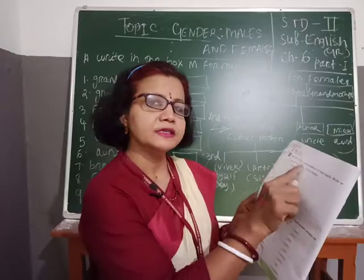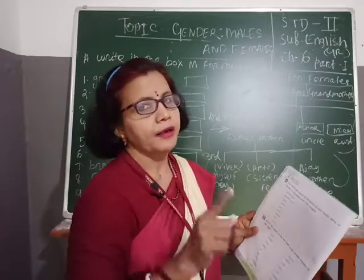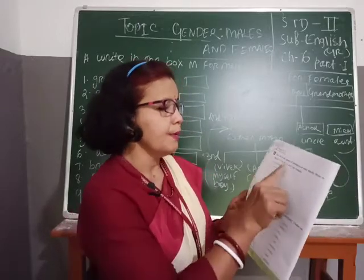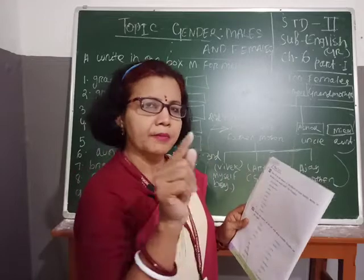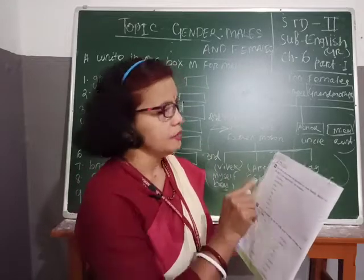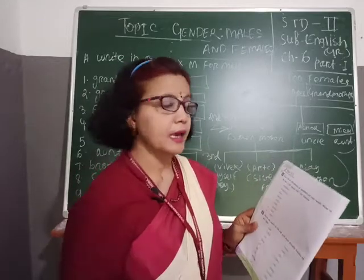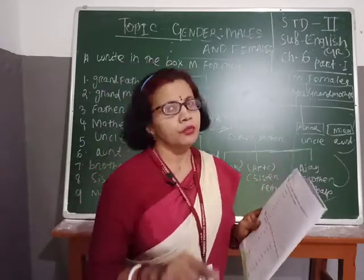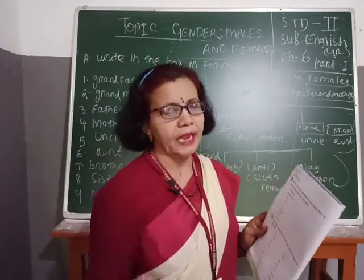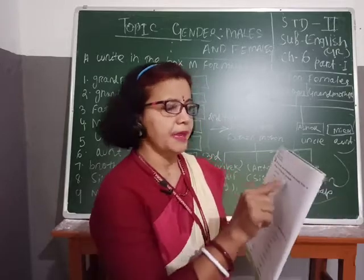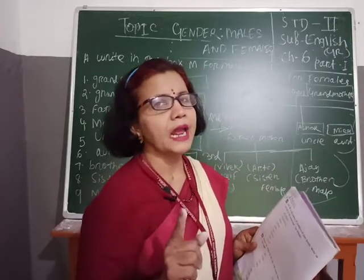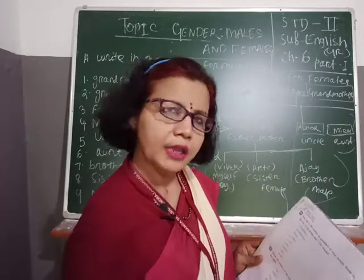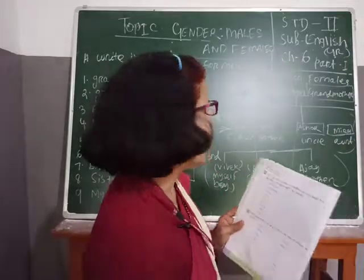Here, how many words are there? Nine words. We will find out which is male and which is female. In the place of male, we will write M. In the place of females, what we will write? F. Let us start.